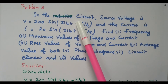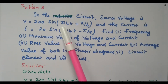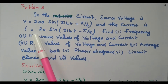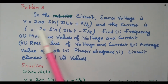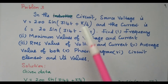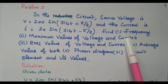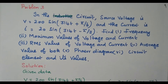Now we go to the third problem. The source voltage is V = 200 sin(314t + π/6) and the current is I = 20 sin(314t − π/3). Both voltage and current equations have phase differences. Find the frequency, maximum values, RMS values, average values, phasor diagram, circuit elements and their values.